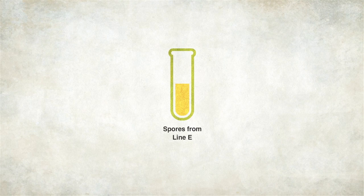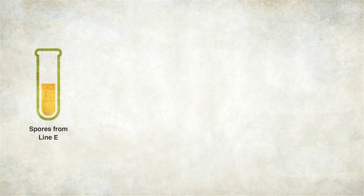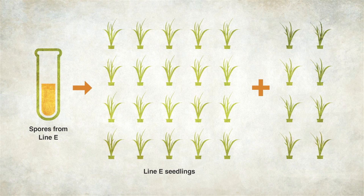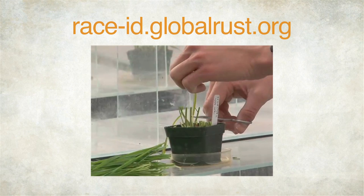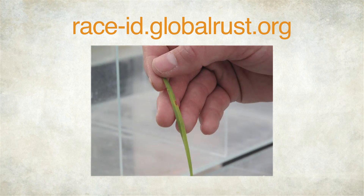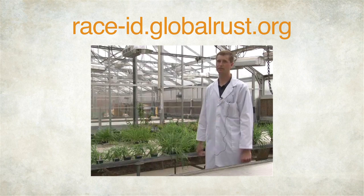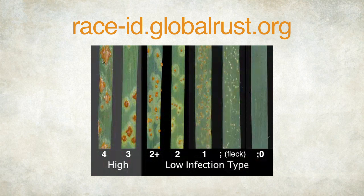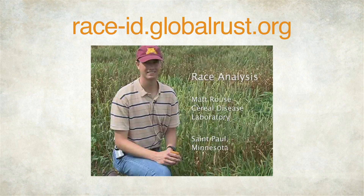To create isolates for race identification, use the bulk collected spores to inoculate new seedlings of the same genotype — urediniospores collected from genotype Line E should be used to inoculate new seedlings of Line E. Although the primary purpose of this inoculation is to produce isolated pustules for subsequent race analysis, we recommend including the eight cereal genotypes in this inoculation as well, to provide more information on the forma specialis of the collected urediniospores. Resulting pustules should be isolated, increased, and pathotyped according to the procedure for the isolation and identification of rust races collected from wheat fields, as described in the race analysis training videos produced for the Borlaug Global Rust Initiative.